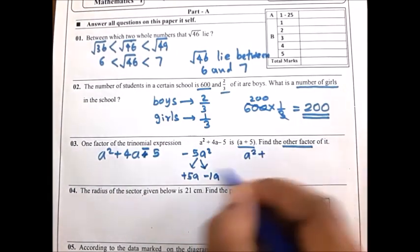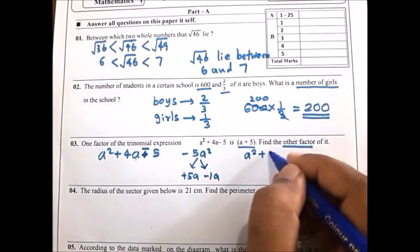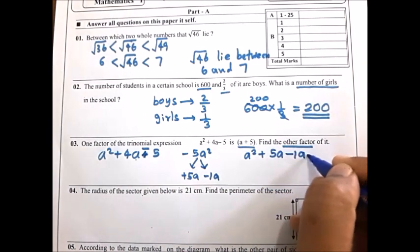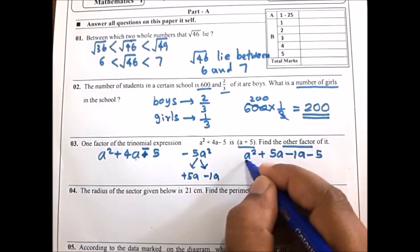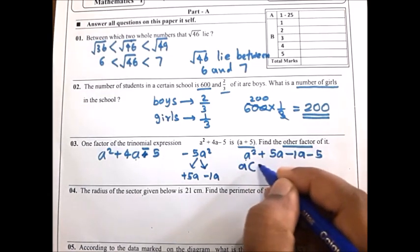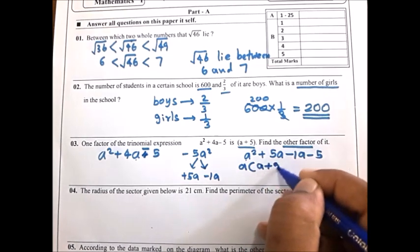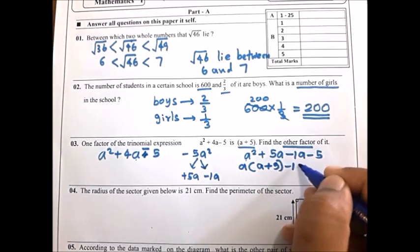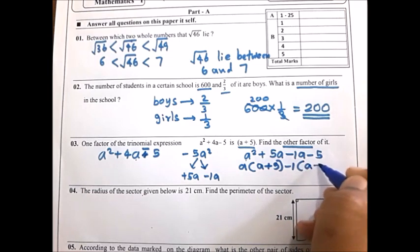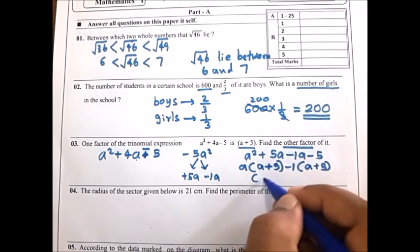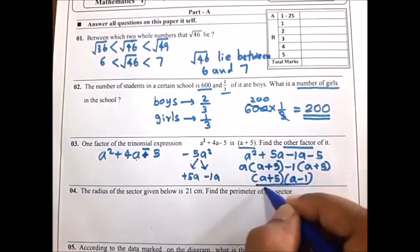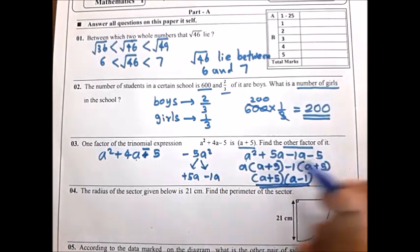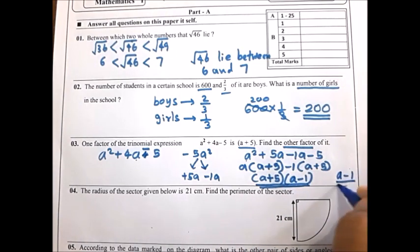Find the pair of terms which has 5a² as its product and 4a as its sum. The terms are plus 5a and minus 1a. So instead of 4a, write plus 5a minus 1a. Now factorize: take a common, giving a plus 5; take minus 1 common, giving a plus 5. The factors are a plus 5 and a minus 1. So the other factor is a minus 1.